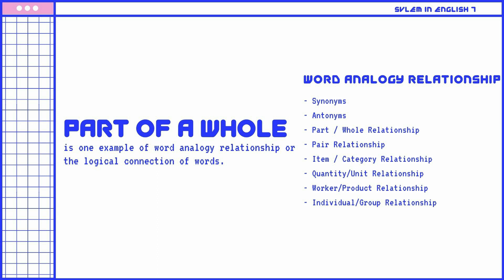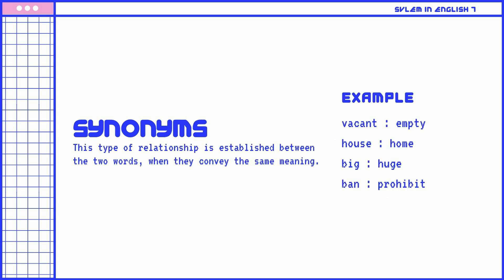These are other examples of word analogy relationships. Synonyms: This type of relationship is established between two words when they convey the same meaning. Examples: Vacant is to empty. House is to home. Big is to huge. Ban is to prohibit.